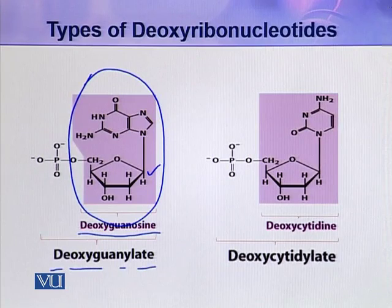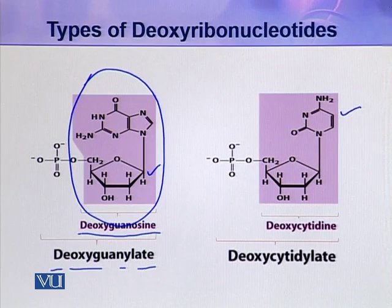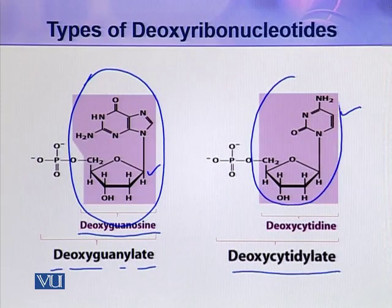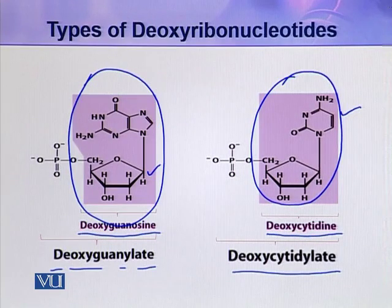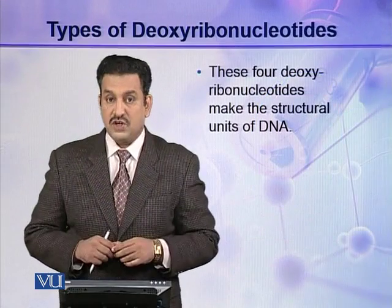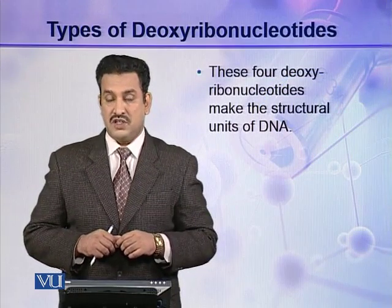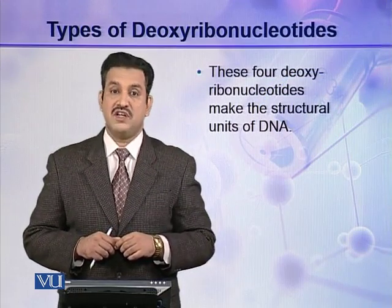In the fourth type of deoxyribonucleotide, if the nitrogenous base is cytosine, the whole nucleotide is called deoxycytidylate. So these are the four types of deoxyribonucleotides present in a DNA molecule, and these four deoxyribonucleotides make up the structural units of a DNA molecule.